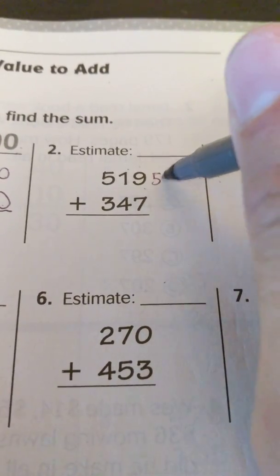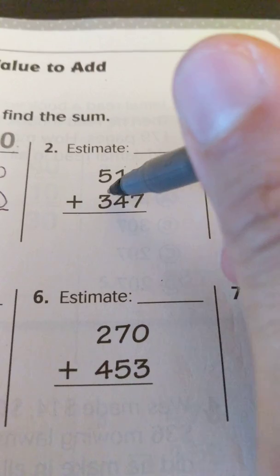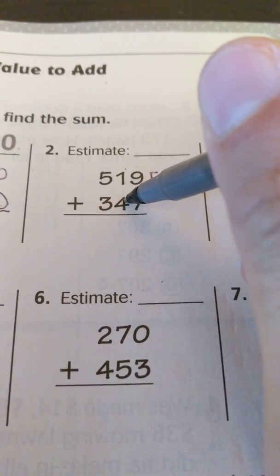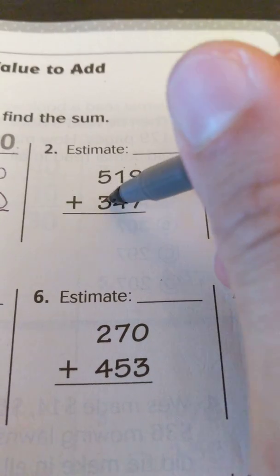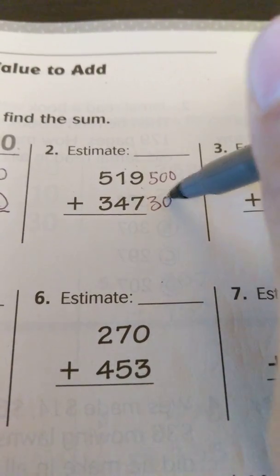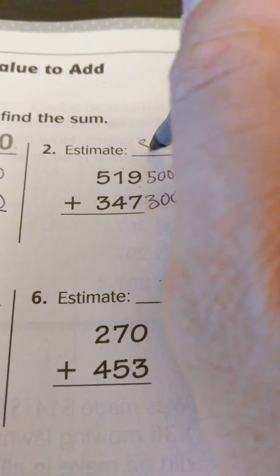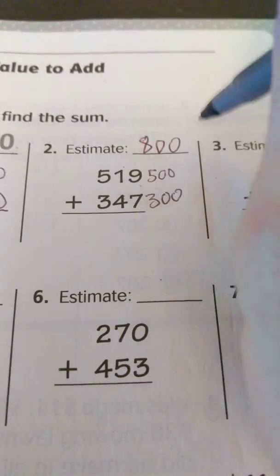So that means this is going to stay 500 instead of being 600. Then I look at the tens again and it's a number that is less than five, so this is also going to stay at 300.